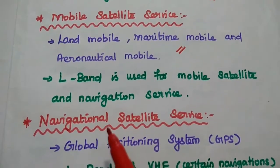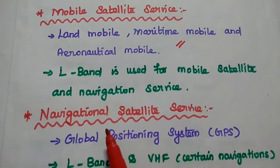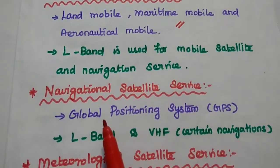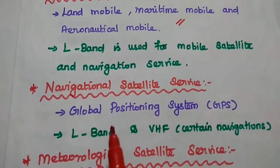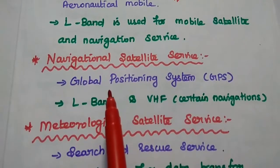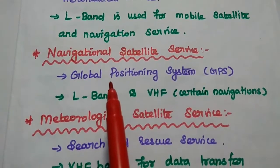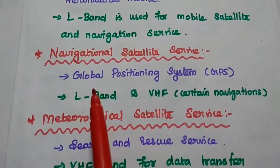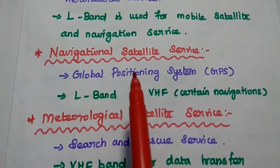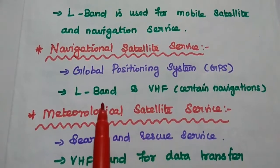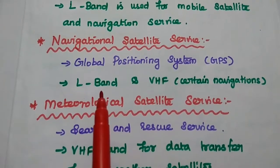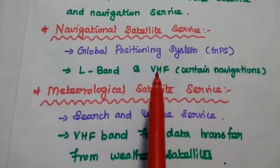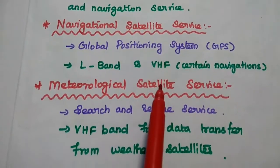L band is used for mobile satellite services and for navigation services. The next one is Navigational Satellite Service. It is mainly used for the global positioning system concept. L band as well as VHF is also used for certain navigations.